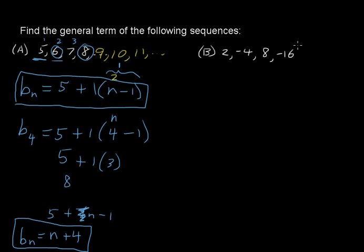2, negative 4, 8, negative 16. What's happening there? We're multiplying by negative 2 every time.